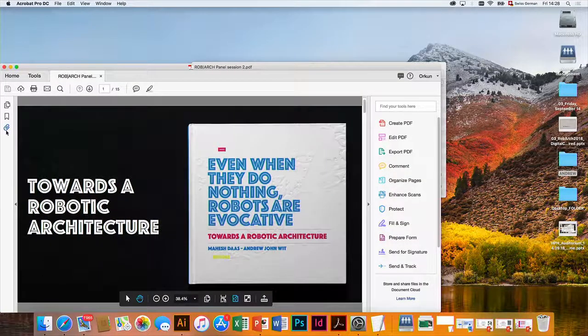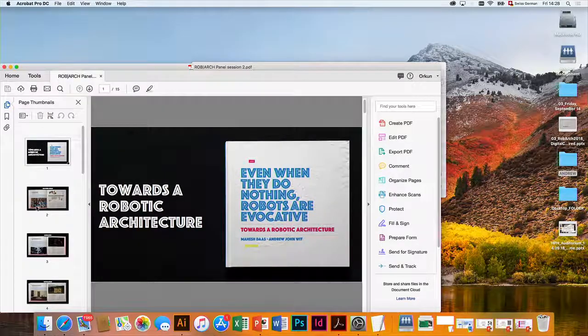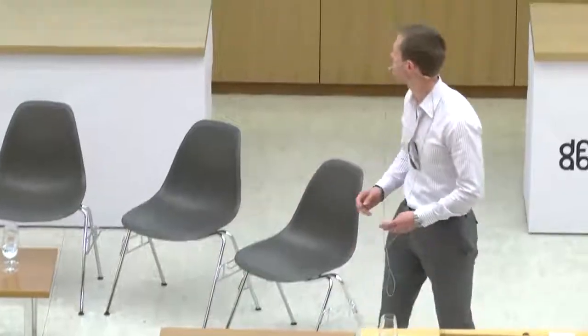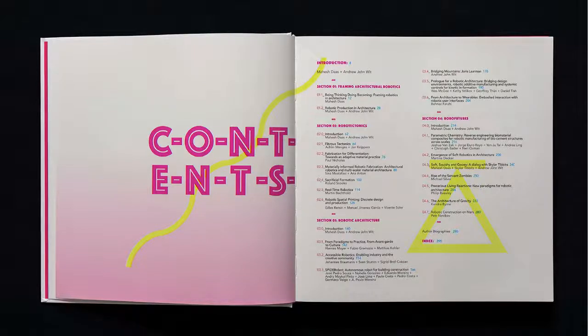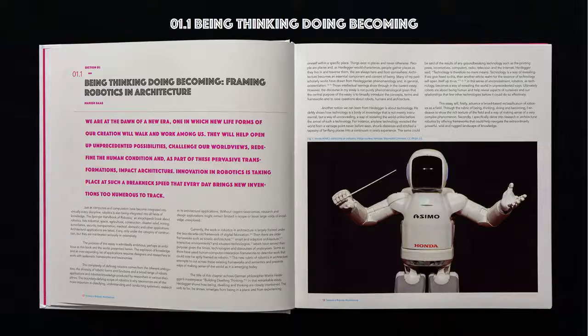We're actually passing around a couple of books for you to browse while we're going through here. Basically this is just a little sneak peek of what's in the book. The book is broken up into several sections. One looks at the framing — what are robotic architectures? We look at how production has basically changed how architecture is made, how the tectonic language of architecture has changed, and lots of other things. We have 40-plus contributors making up these four sections, and many of them are here in the audience today.